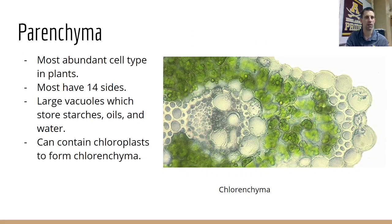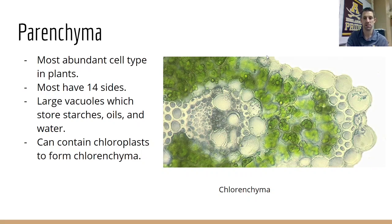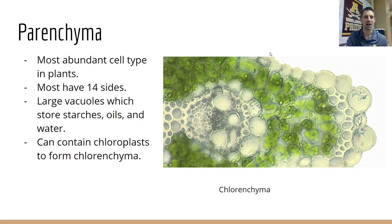Parenchyma, as I mentioned, is by far the most common type of cell. These are the types of cells you'll find filling space in leaves and stems. When you add chloroplasts to them, they're the ones that do actual photosynthesis — chlorenchyma are just parenchyma cells that have chloroplasts inside. They can also be used for storage of materials. An interesting fact is that most of them have 14 sides, which is a very unique polygon.